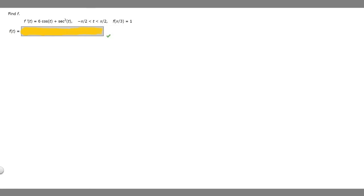So in this problem we're told to find f. We're told that f prime of t is equal to 6 times the cosine of t plus secant squared of t. Then we're given this range and we're told that f of pi over 3 is equal to 1.